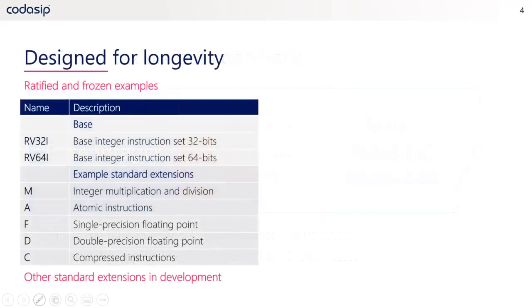The third factor is that RISC-V is designed for longevity. What I mean by that is once part of the instruction set is ratified, it is also frozen. The base integer instruction sets for 32 bits and 64 bits are frozen, along with a number of standard extensions. There are other standard extensions in development, so over time more and more of these will be ratified and frozen.